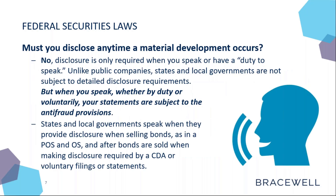When do these anti-fraud provisions apply to you? They apply when your issuer in a document, or you either in a statement or in a writing, make statements about the issuer's finances or financial conditions that are reasonably expected to reach investors and the trading markets. Practically speaking, this means these laws apply when you're providing information to the rating agencies — the presentations you provide them and the statements you make during those meetings are all subject to the anti-fraud provisions. When you prepare and post a preliminary official statement, a final official statement, and any supplements, you're speaking to the market and the anti-fraud provisions apply in those instances.